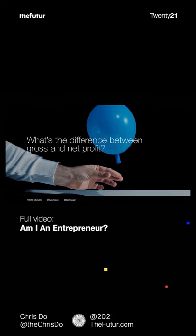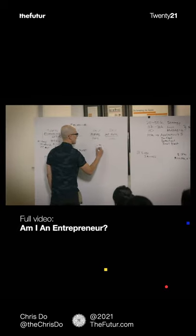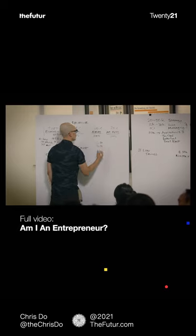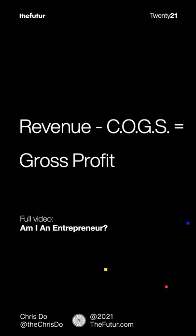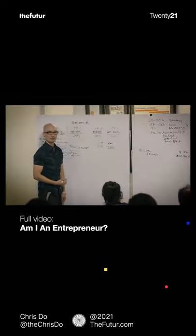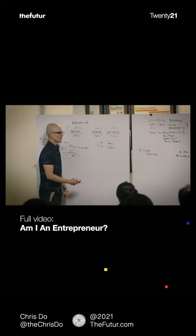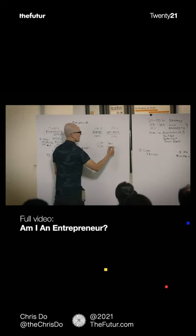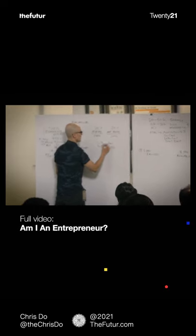What's the difference between gross profit and net profit? Gross profit is revenue minus cost of goods sold — COGS. It doesn't cover overhead. It doesn't cover the intangibles. Revenue minus cost of goods sold, that's what gross profit is.